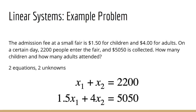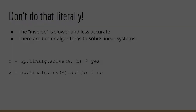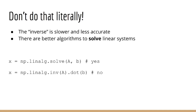We know from our math studies that since we have a system of two equations and two unknowns, we can solve this problem. If we let x be a vector containing x1 and x2, this becomes a matrix equality. We call this kind of problem a linear system. Luckily, we've already covered all the tools we need. The solution is to multiply both sides by A inverse — we get that x is equal to A inverse times b.